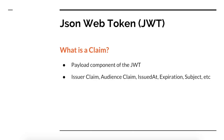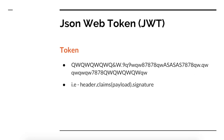So what is a claim? It is actually the payload component of the JWT. It contains a lot of information about the issuer, who is going to be the audience, at what time the token was issued, when it's going to expire, the subject, and you can even have your customized elements put into the claim object. So the JSON Web Token gives you a token which is a combination of header, claims, and signature.